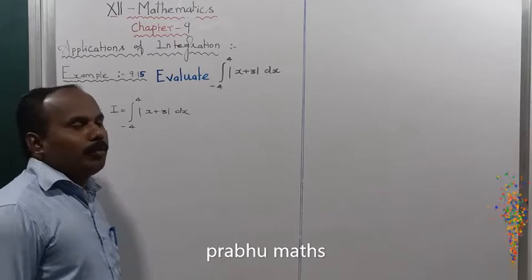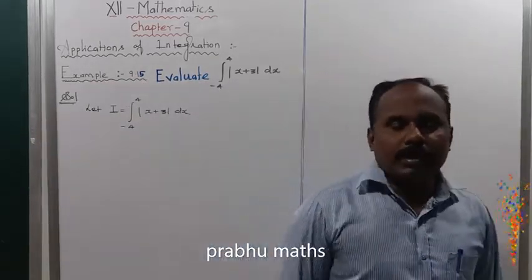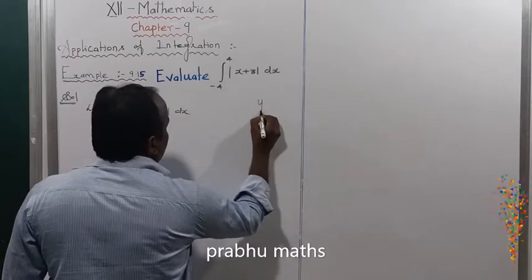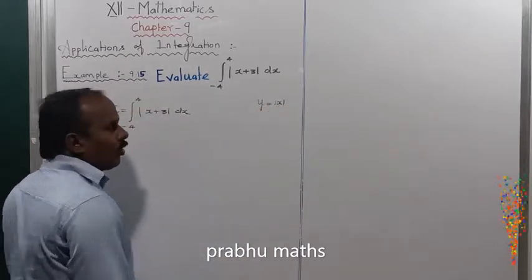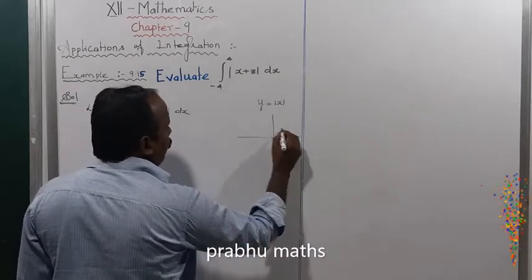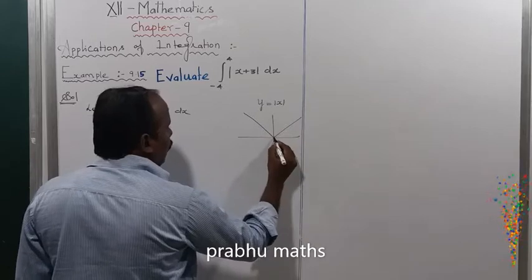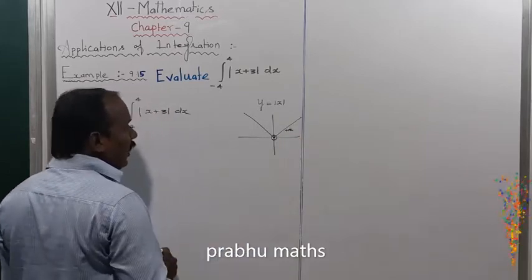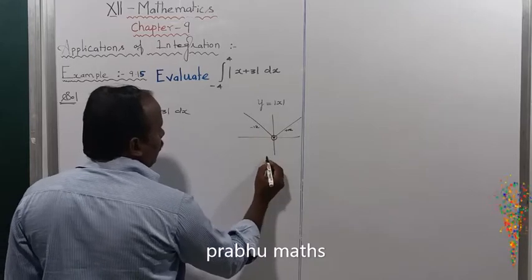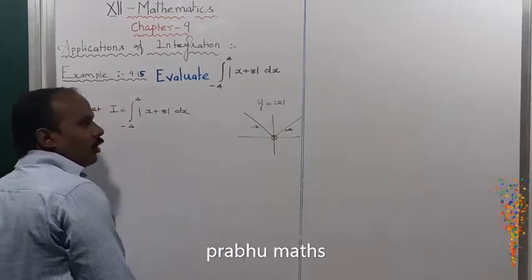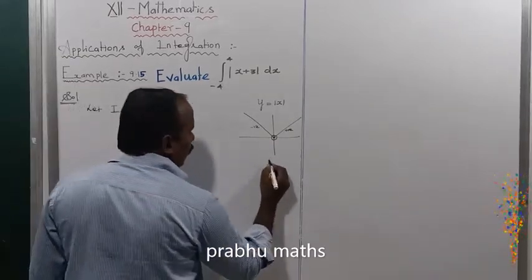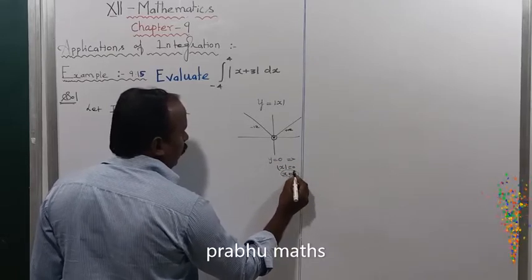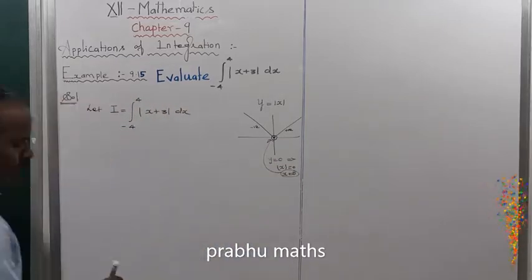The definition of modulus of x means: left side fully minus, right side fully plus — meeting the x-axis at any point. So suppose we take y equal to modulus of x. The graph of y equal to modulus of x passes through the point x equal to 0. For the right side it is positive, left side negative. Setting y equal to 0 gives modulus of x equal to 0, so x equal to 0. The meeting point is x equal to 0.